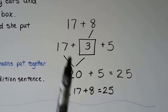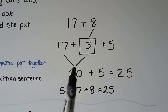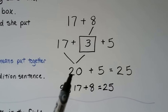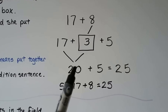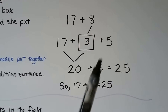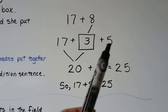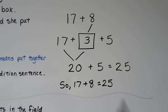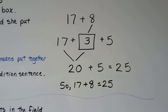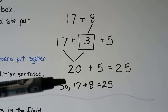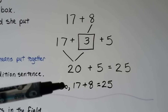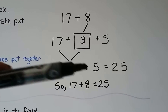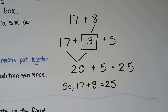We're going to use the seventeen and the eight in an addition sentence and put them together to find out how many in all. Seventeen plus eight — we can break the eight apart as a three and a five. We can give that three to the seventeen: seventeen, eighteen, nineteen, twenty. That makes two tens, that makes a twenty. We have five left over from that eight. Twenty plus five is equal to twenty-five. So our initial problem, seventeen plus eight, is equal to twenty-five.